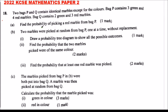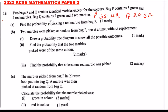Part A: find the probability of picking a red marble from Bag P. Bag P has three green marbles and four red marbles, so it has a total of seven marbles. The probability of picking a red marble from Bag P is equal to the number of red marbles divided by the total, which is four over seven.